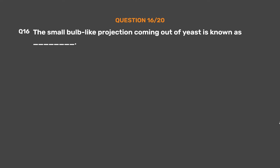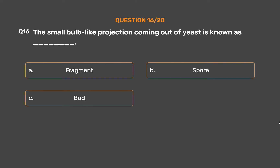Question No. 16. The small bulb-like projection coming out of yeast is known as: Option A – Fragment. Option B – Spore. Option C – Bud. Option D – Seed.